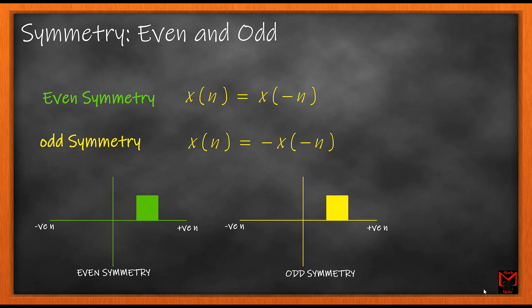Signal symmetry can be even or odd. Even symmetry is a same sign symmetry whereas odd symmetry is opposite sign symmetry, as can be seen in the figures shown here.